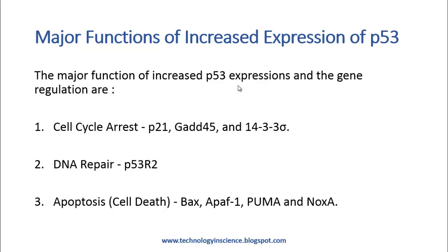Cell cycle arrest is needed because if a mutation is present during the replication phase, the DNA is doubled and replicated, so the mutation will also be replicated into the daughter cell. To prevent that, as a precautionary measure, the cell cycle is arrested so that the cell can repair the damage and proceed further. P53 expression also helps in the DNA repair mechanism.